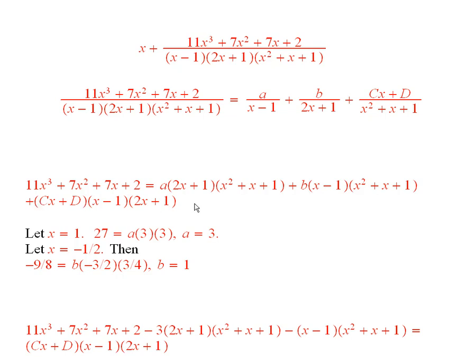To do that most easily, you ought to let x equal to 1. Because then this term will be 0 and this term will be 0. You put in 1 wherever you see an x and you can solve for a. So when you do that, you find that 27 is equal to 9a and so a is equal to 3.